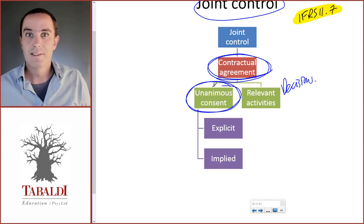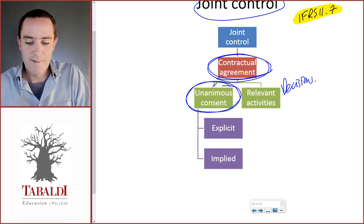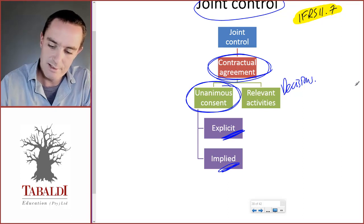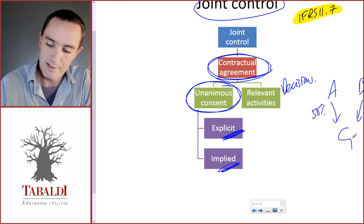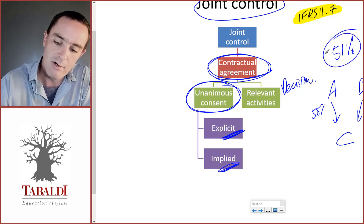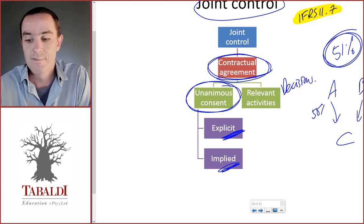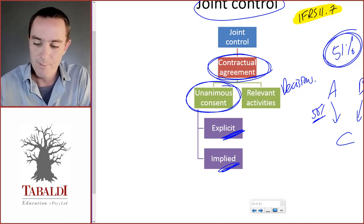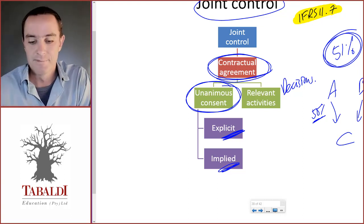Unanimous consent means the two parties have to agree when they make decisions before those decisions can be made. This unanimous consent can either be explicit — stated in the contractual agreement — or it could be implied. For instance, if two companies A and B each own 50% in company C, and the contract states that 51% is required to make decisions on the relevant activities, that implies A and B have to work together. With 50% alone, neither company can make those decisions, so unanimous consent is implied, making this a joint arrangement where A and B jointly control C.